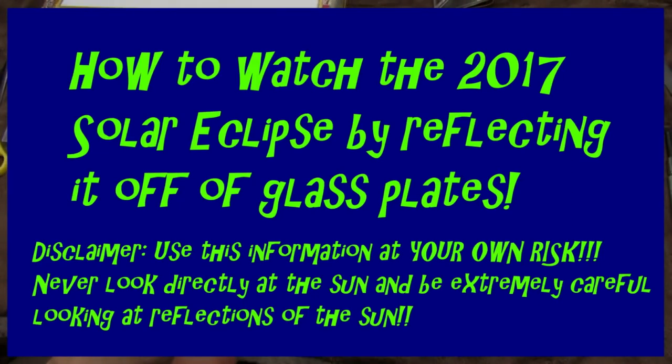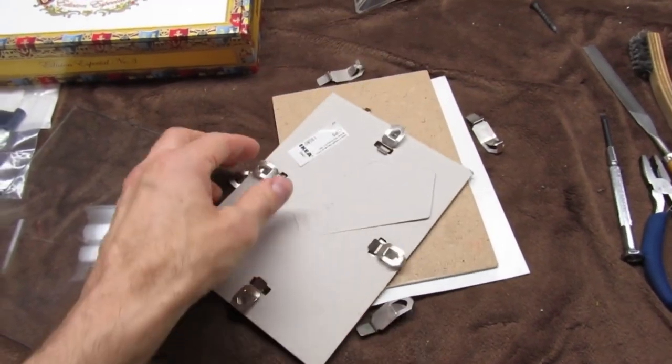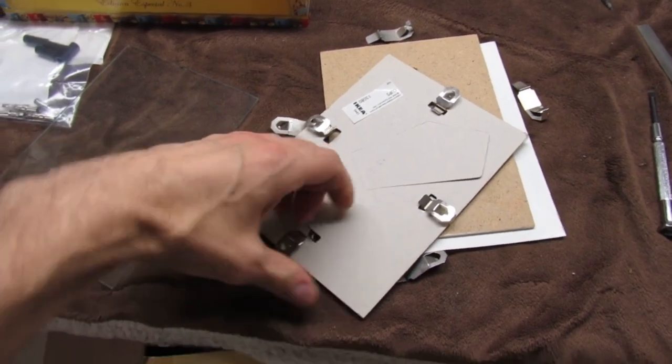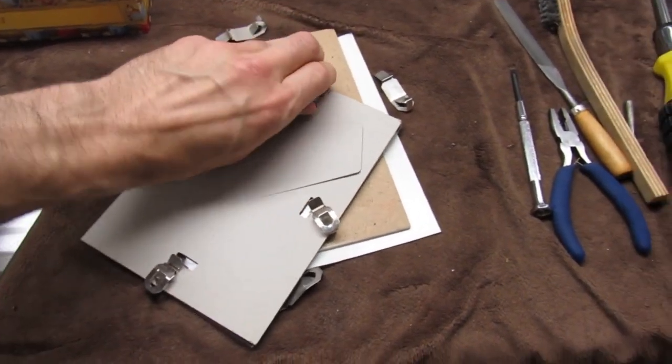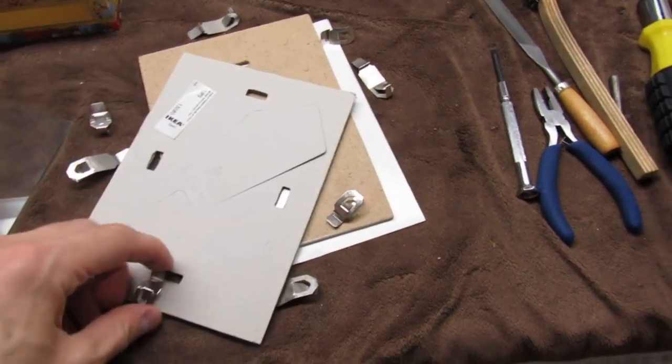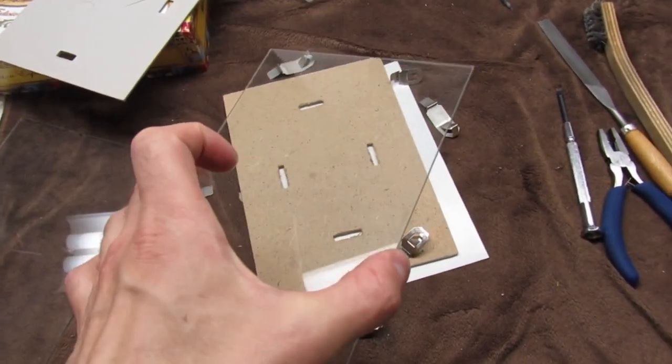This alternate way to view the solar eclipse involves reflecting the sun off of a sheet of glass. This is just a picture frame that I don't need, so I'm popping the clips off here so that we get a nice plate of glass that we can use outside, a simple sheet of glass like this.